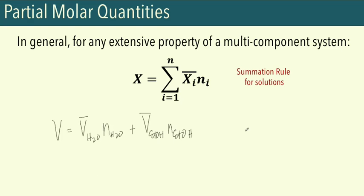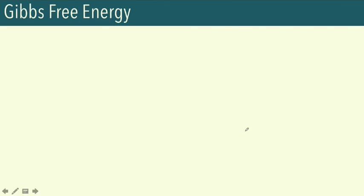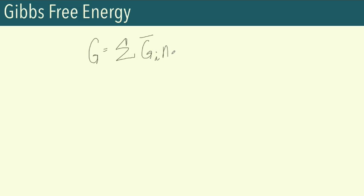We can also apply the summation rule for the Gibbs free energy. To get the total Gibbs free energy of a multi-component system: G equals the summation of the partial molar Gibbs for component i times the number of moles of component i, summed over all components. We could also investigate this partial molar Gibbs more closely: the partial molar Gibbs of component i is expressed as the partial of G with respect to the number of moles of component i, at constant temperature, pressure, and constant number of moles of all other components.